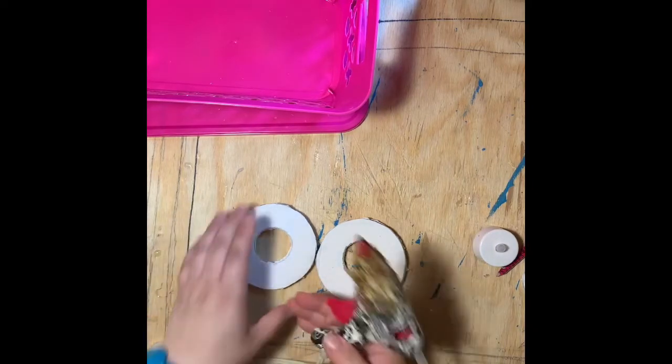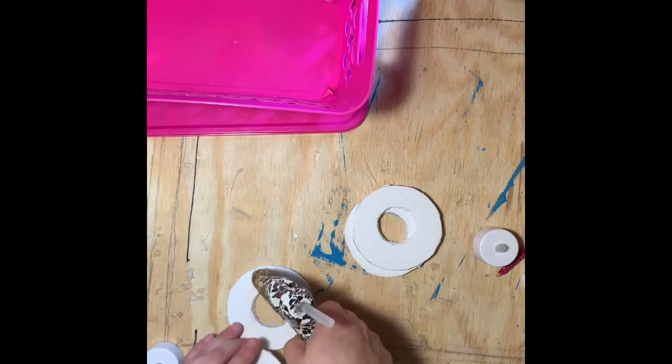After your tea light circles are cut out, you're going to take two circles and glue them together.